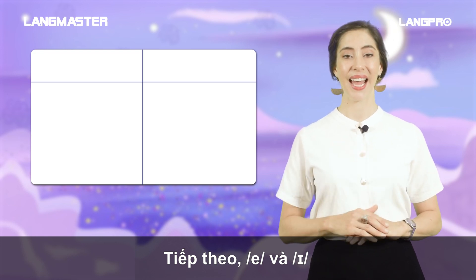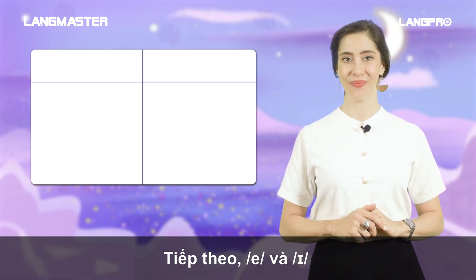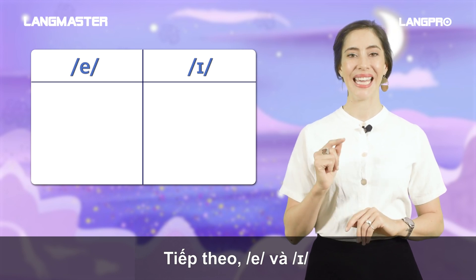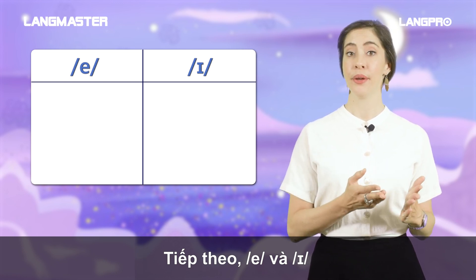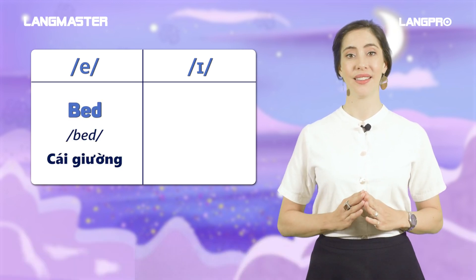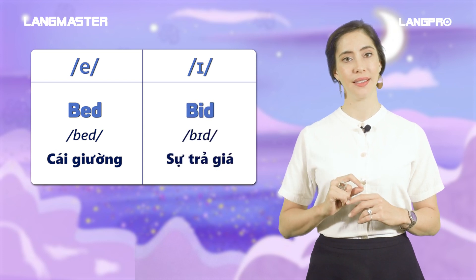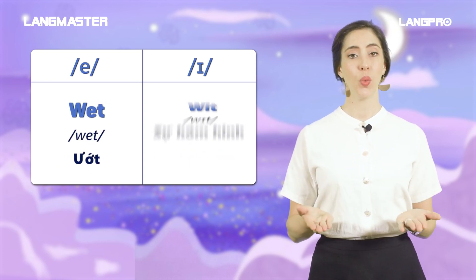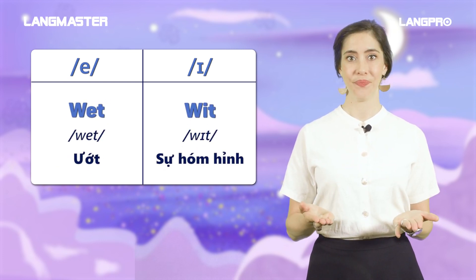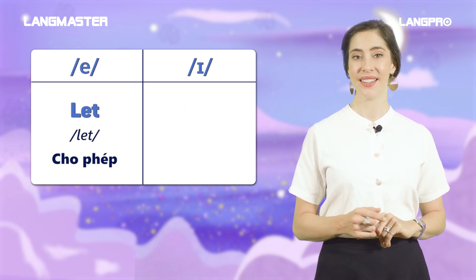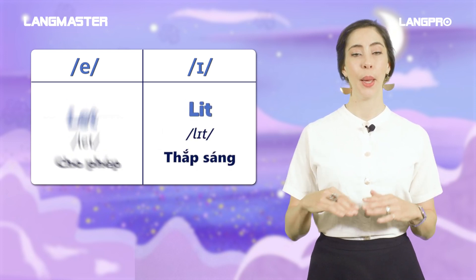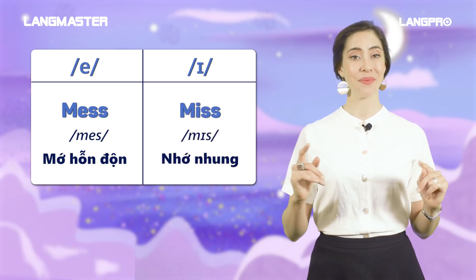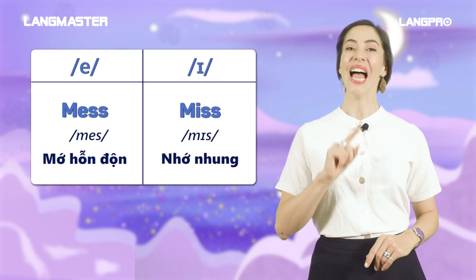Next, we have /ɛ/ and /ɪ/. Here are some minimal pairs: bed, bid, wet, wit, let, lit, mess, miss.